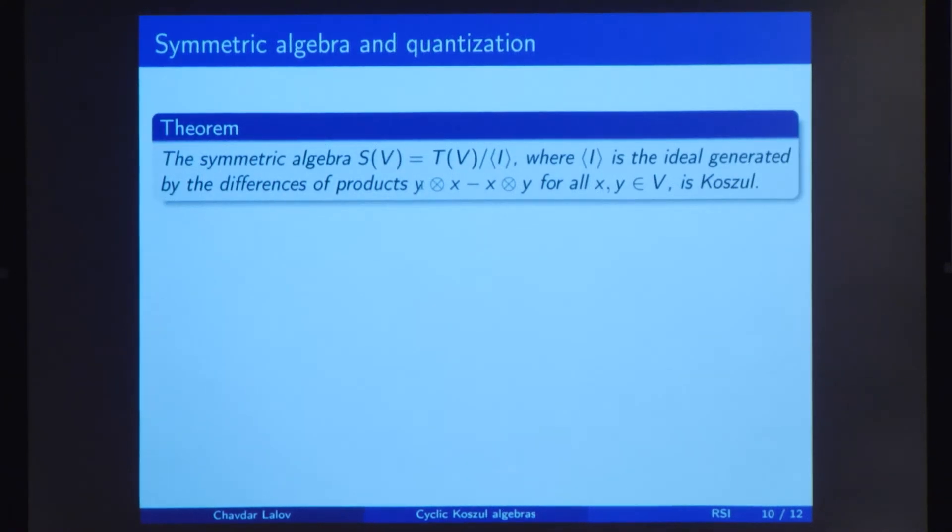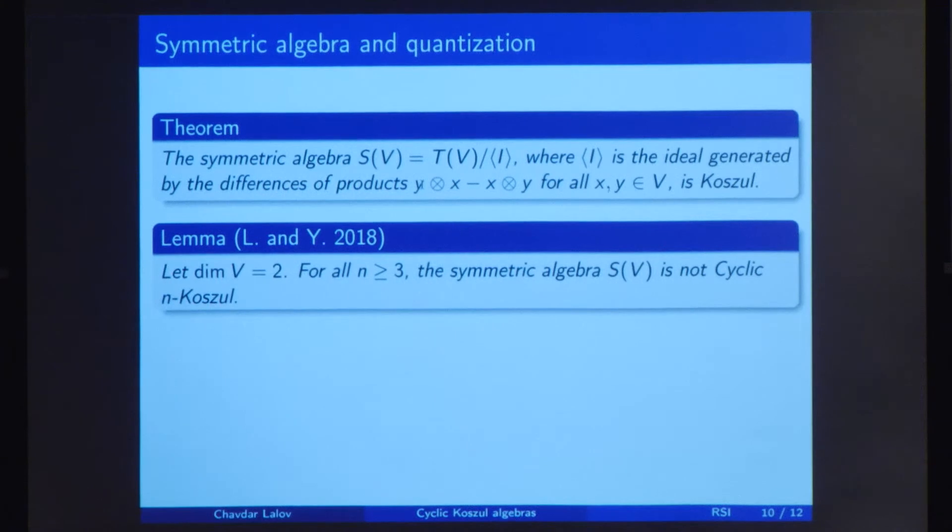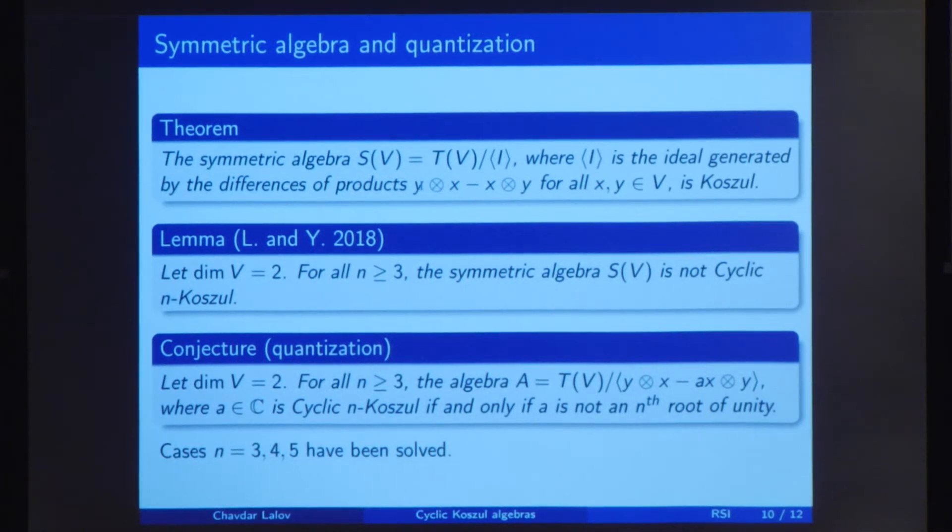But on a deeper level, Kozul algebras and cyclic Kozul algebras are quite different. There's this theorem that the symmetric algebra, this is just taking the quotient by y tensor x minus x tensor y for all x and y. This implies actually commutativity in the algebra. Then the symmetric algebra is Kozul. What we did in our project was to prove that if the dimension of V is 2, then S(V) is not cyclic n-Kozul for any n bigger or equal to 3. And then something interesting happened. If we quantize the symmetric algebra, i.e. square the commutativity property, then it turned out we conjectured that this algebra is cyclic n-Kozul if and only if A is not an nth root of unity. We also checked the first cases which were verified and in the moment we're working on an induction.